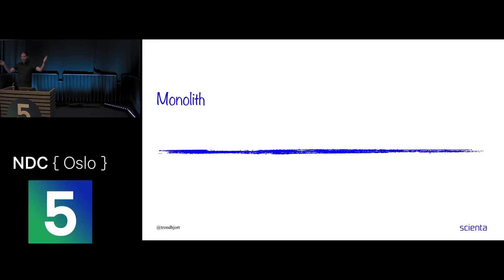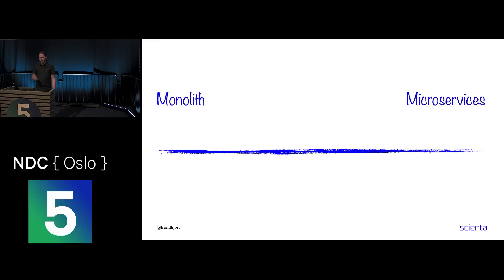So let's try to see what microservices are. I see them as a spectrum — at one end you have a monolith, a big huge thing, and microservices on the other end. For me, that's a false dichotomy. I don't think it is black or white. It's not either-or; there are lots of nuances in between.